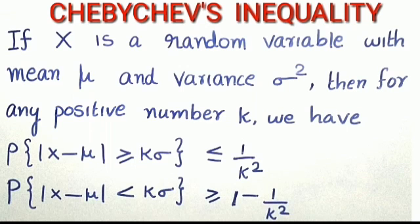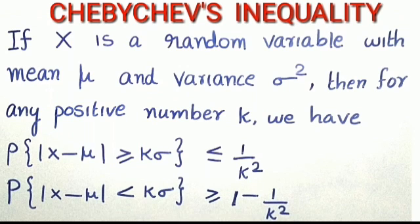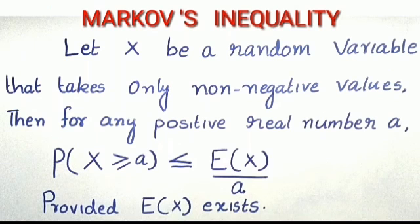Chebyshev's inequality: If x is a random variable with mean μ and variance σ², then for any positive number k, P(|x − μ| ≥ kσ) ≤ 1/k². Second form: P(|x − μ| < kσ) ≥ 1 − 1/k².